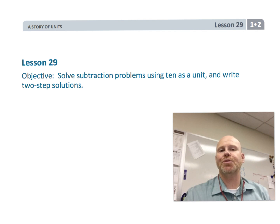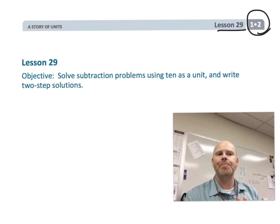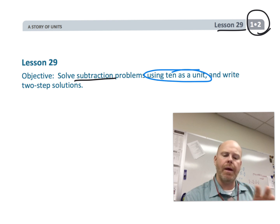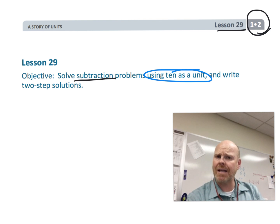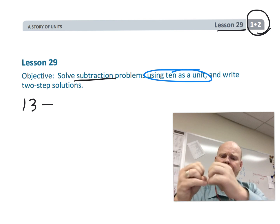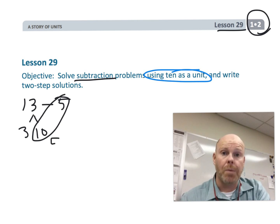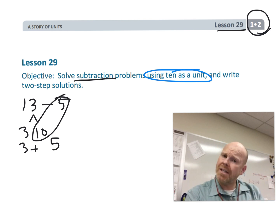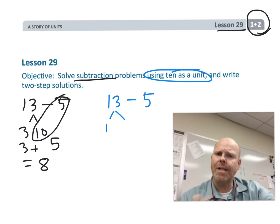This is first grade module 2 lesson 29. In this lesson we're going to focus only on subtraction and we're going to be again using that 10 as our benchmark, kind of repeating what we've done in previous lessons. Only this time we're going to be notating it, writing it down in a slightly different way — recording our steps in two separate lines. So let's get going.